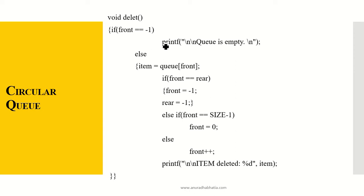For deletion: if front equals minus 1, print 'queue is empty.' Else item = q[front] — the item is retrieved. Then we check if front equals rear, or if front equals size minus 1. After all conditions are checked, it prints 'item is deleted.'